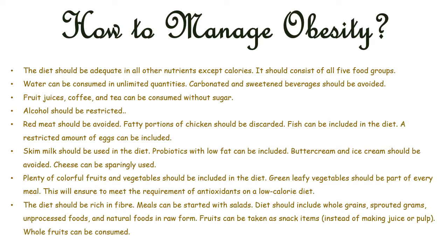Butter, cream, and ice cream should be avoided, and cheese can be used sparingly. Plenty of colorful fruits and vegetables should be included in the diet, and green leafy vegetables should be a part of every meal. This will help meet the requirement of antioxidants on a low-calorie diet. The diet should be rich in fiber. Meals can be started with salads, and the diet should include whole grains, sprouted grams, unprocessed foods, and natural foods in raw form. Whole fruits should be consumed as snack items instead of juice or pulp.